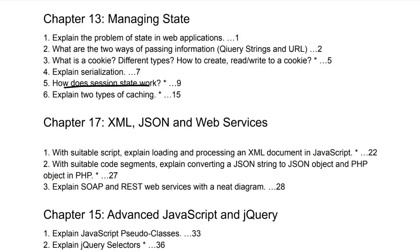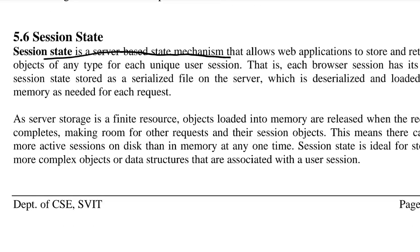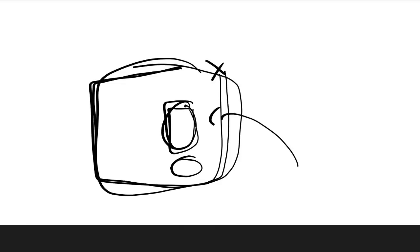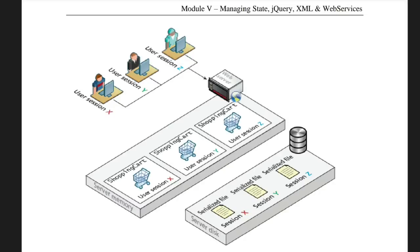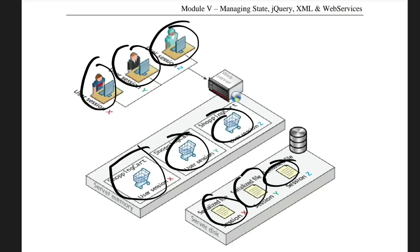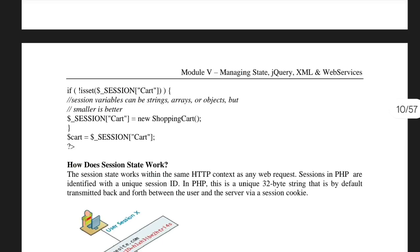The next question is: how does session state work? Session state is a server-based mechanism that allows a web application to store and retrieve objects of any type for each unique user session. For example, on Amazon, if you added a product to your cart and closed the screen, session state allows you to continue from that same moment when you reopen. Sessions for different users are stored in serialized format in memory, and when the user re-logs in, that specific session is given back to them.